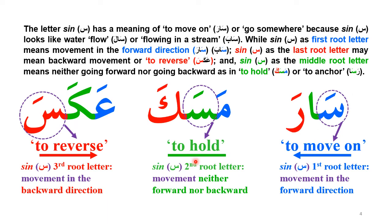This applies when Seen is the first letter, because in Arabic the most important thing is brought forward — natural or flowing movement is indicated by Seen. If Seen is the last letter, the Sara meaning changes: 'Akasa' means to reverse, going in the opposite direction. So Sara means going forward, and Akasa means going backward.